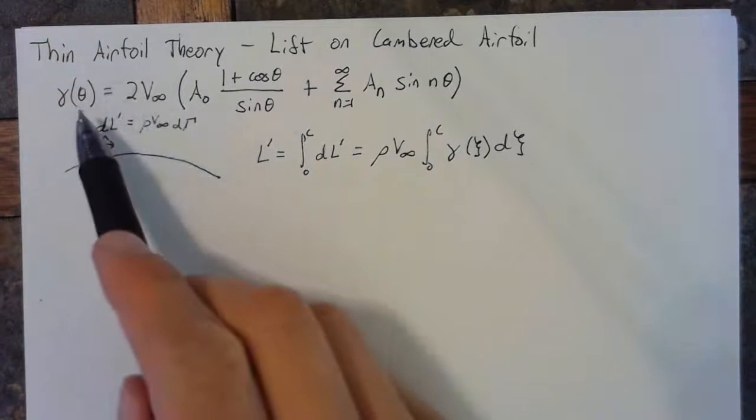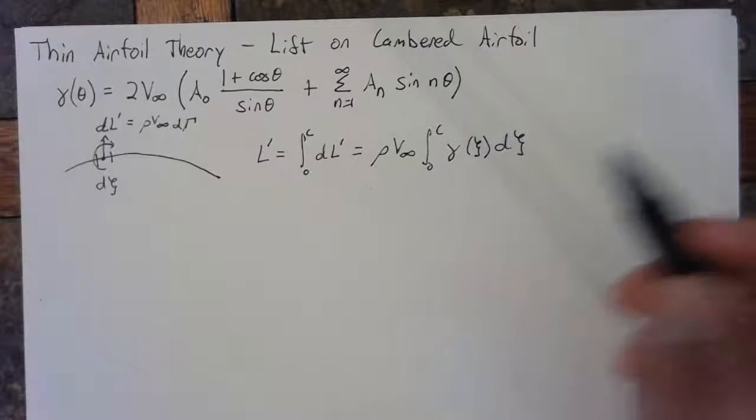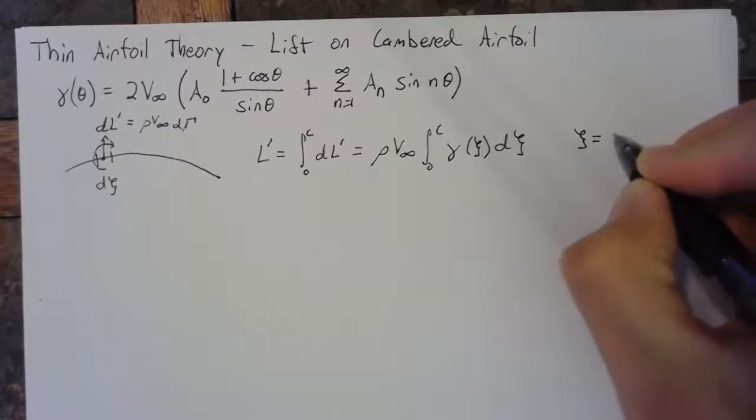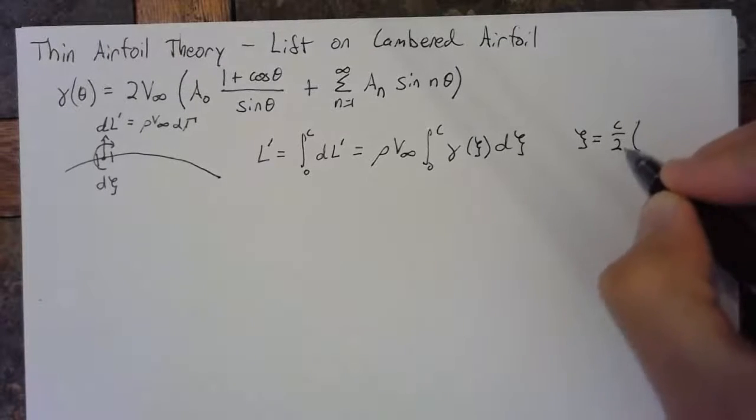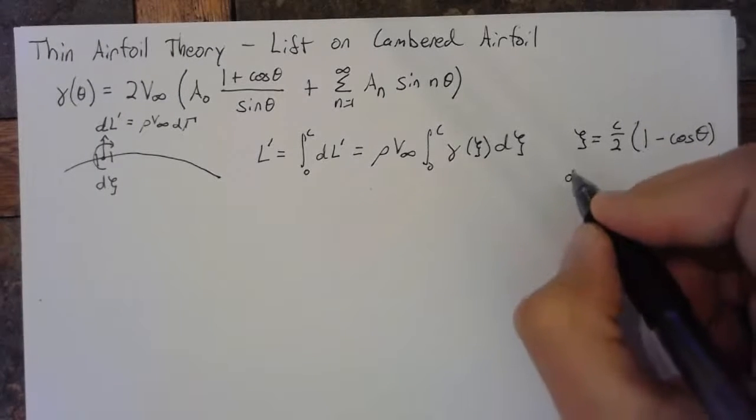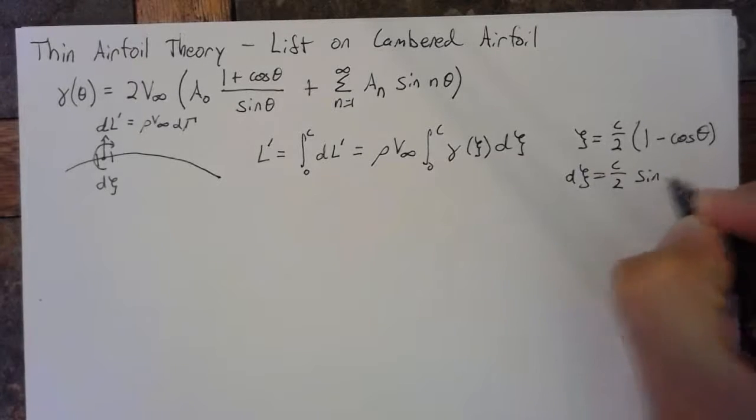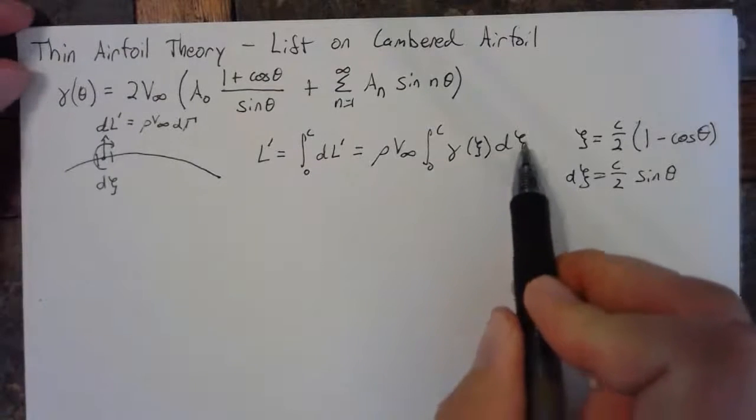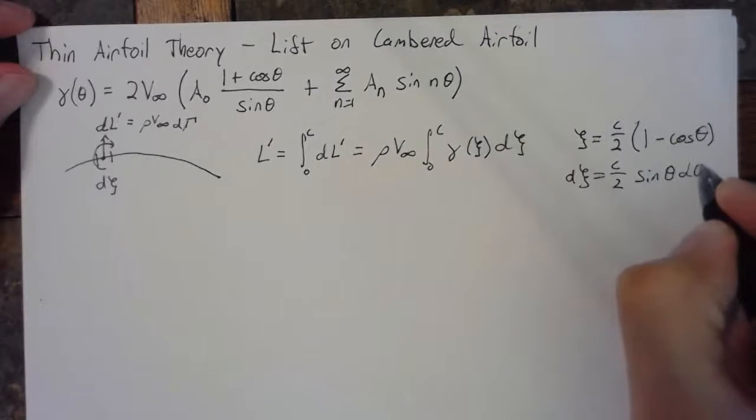Now, since we have gamma as a function of theta, we need to convert this into theta using our relationship that we've been using for all of thin airfoil theory, which is psi equals c over 2 times 1 minus cosine theta, and d psi equals c over 2 times sine theta d theta. So we'll substitute this d psi with our theta term.